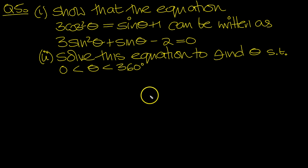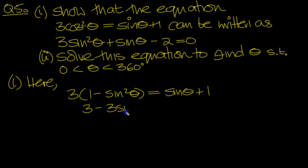Okay, I've paraphrased the question here. So part 1: here 3cos²θ can be replaced by 1 - sin²θ, which equals sinθ + 1. So we've got 3 - 3sin²θ = sinθ + 1.